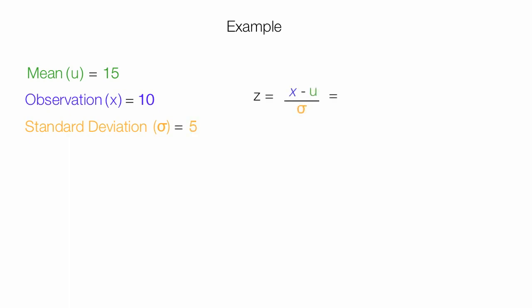I'm going to plug the values into this equation, so I have 10 minus 15 divided by 5. This equals negative 5 divided by 5, which equals negative 1.